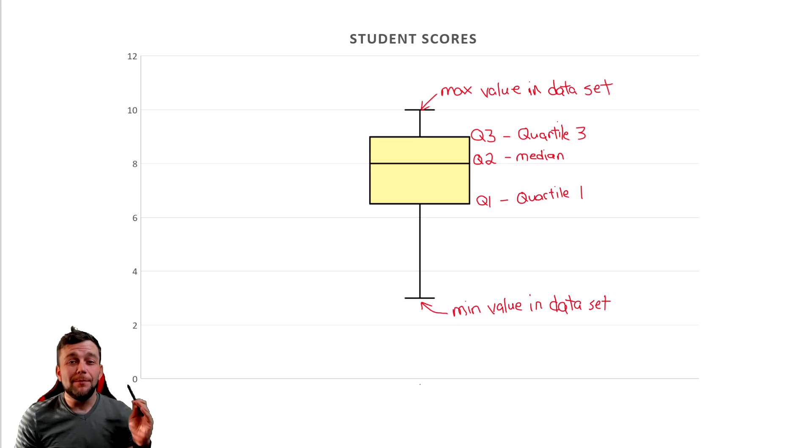And we can go through and define each component so you have a better understanding. I know it looks like a lot, but I promise you once we go through each component, it's not going to be too bad. At the very top, we have our maximum value in our data set. If you remember the dot plot from before, the maximum value was 10. So that's why that line is at 10.